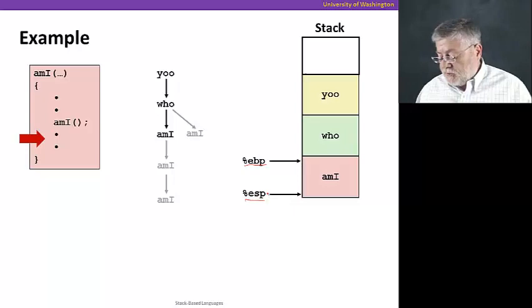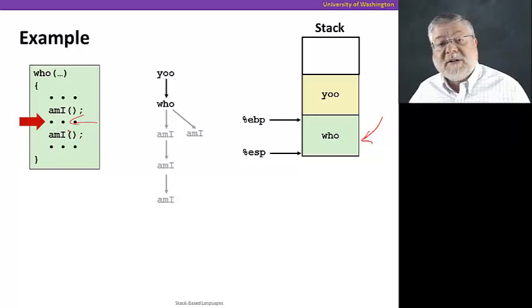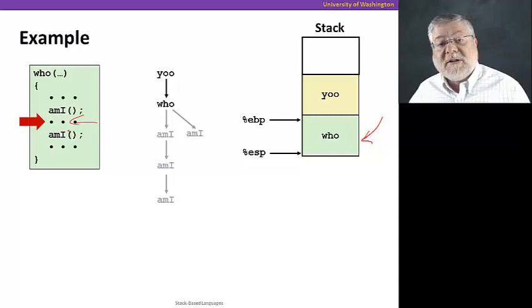And now our next thing is to return from this instance of mi back to who. And when we do that, we'll eliminate the last of those frames for mi. And we're now back at the frame for who with its base pointer and stack pointer at either end. So we're now in the middle of the procedure who, and we're about to do our second call to mi there. So that'll put another copy of mi's stack frame on the stack. We'll return from that back to who, and then we're done with who, so we'll return back to u. And just have that left on the stack.